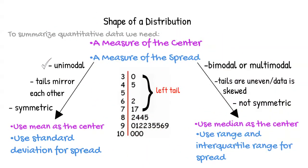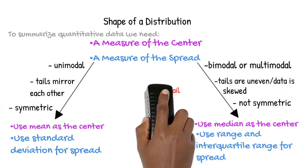However, the left tail stretches out much further than the right tail. With a longer left tail, the data is said to be left skewed. This leads to the display not being symmetric, which indicates that we need to use the median as the center and range and interquartile range for the spread.